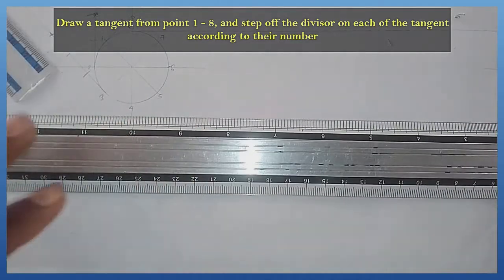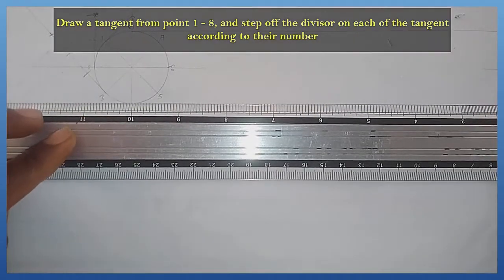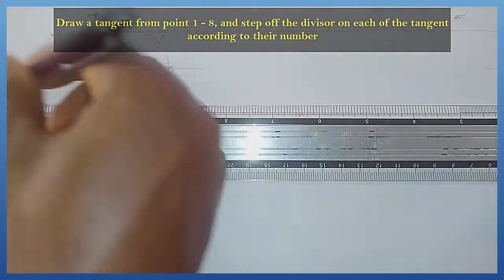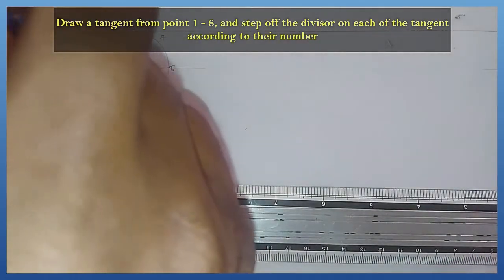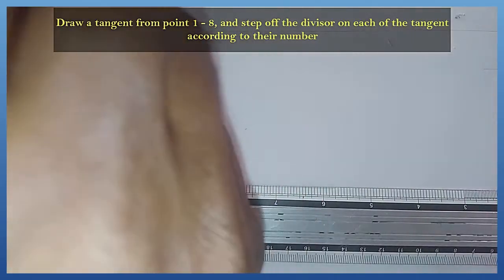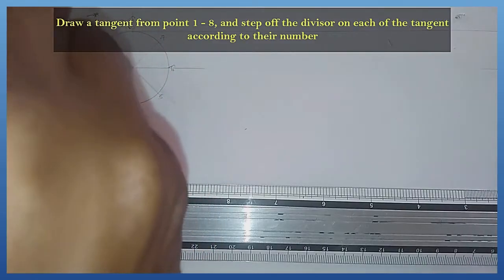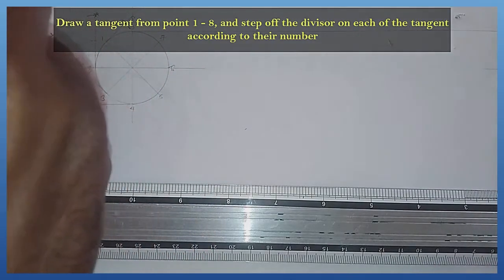On point number 4, it's going to be this way. I'm going to draw the tangent at point number 4 and I'm going to step it off 4 times: 1, 2, 3, and 4.